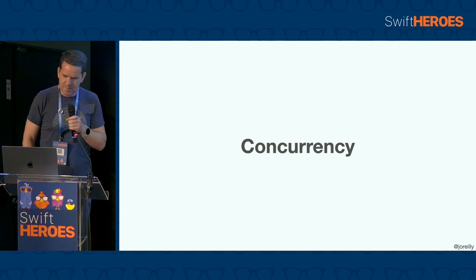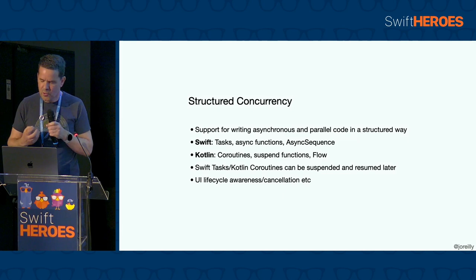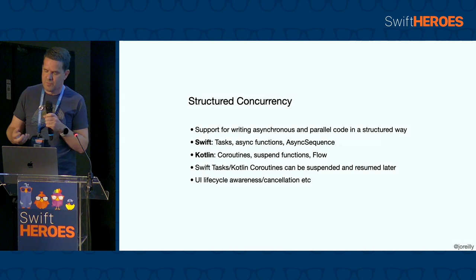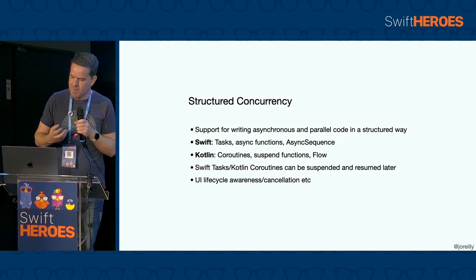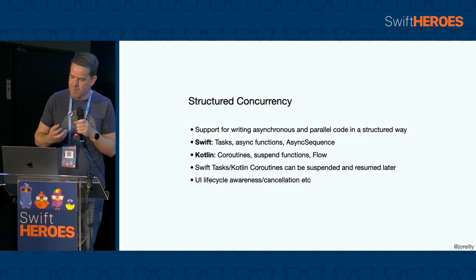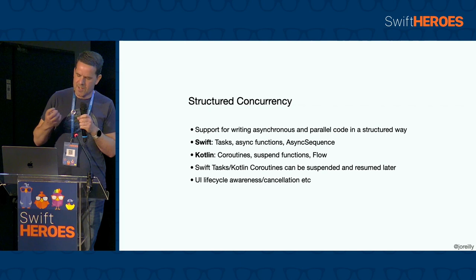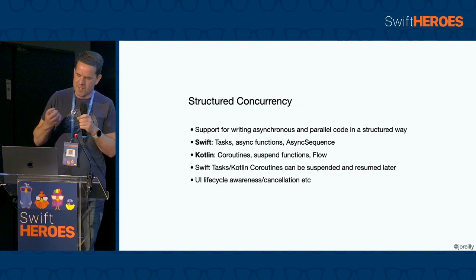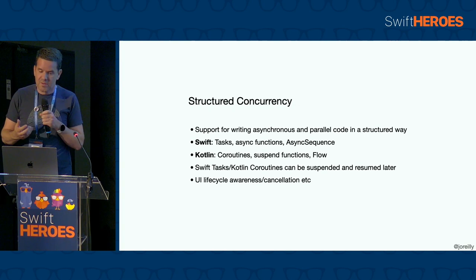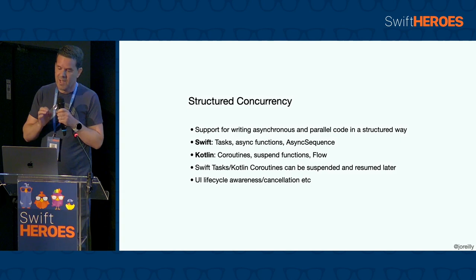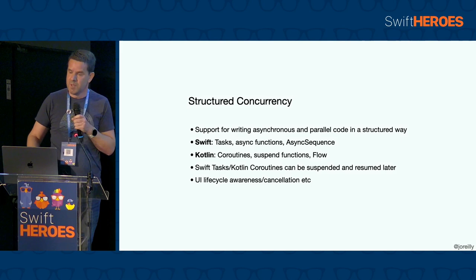Next up, concurrency — specifically the structural concurrency capabilities we now have on both platforms. This is a really powerful capability that allows us to write async code in a way that's easy to read, and allows a more deterministic structured approach to error handling and cancellation. A key enabler is the ability to have code that can be suspended at particular points and resumed later. Swift supports this through things like tasks, async functions, and async sequence, and Kotlin similarly through coroutines, suspend functions, and flow. A very important aspect is how invocation of this code can be tied into the UI lifecycle, allowing automatic cancellation when the view disappears.